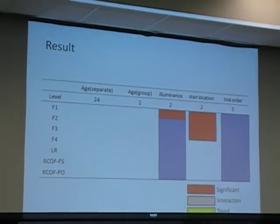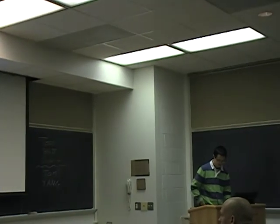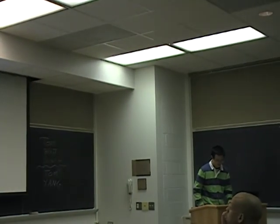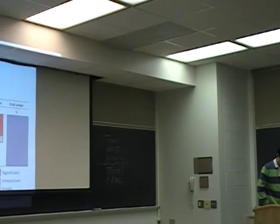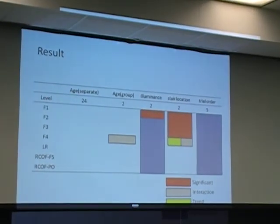Stair location had a significant effect on F1, F2, and F3. There is a trend for F2 and F4 towards age and stair location interaction. Elderly had a significantly lower anterior shear force on F2. There was a significant stair location and age interaction on LR. The older subjects had a significantly higher LR on stair four.